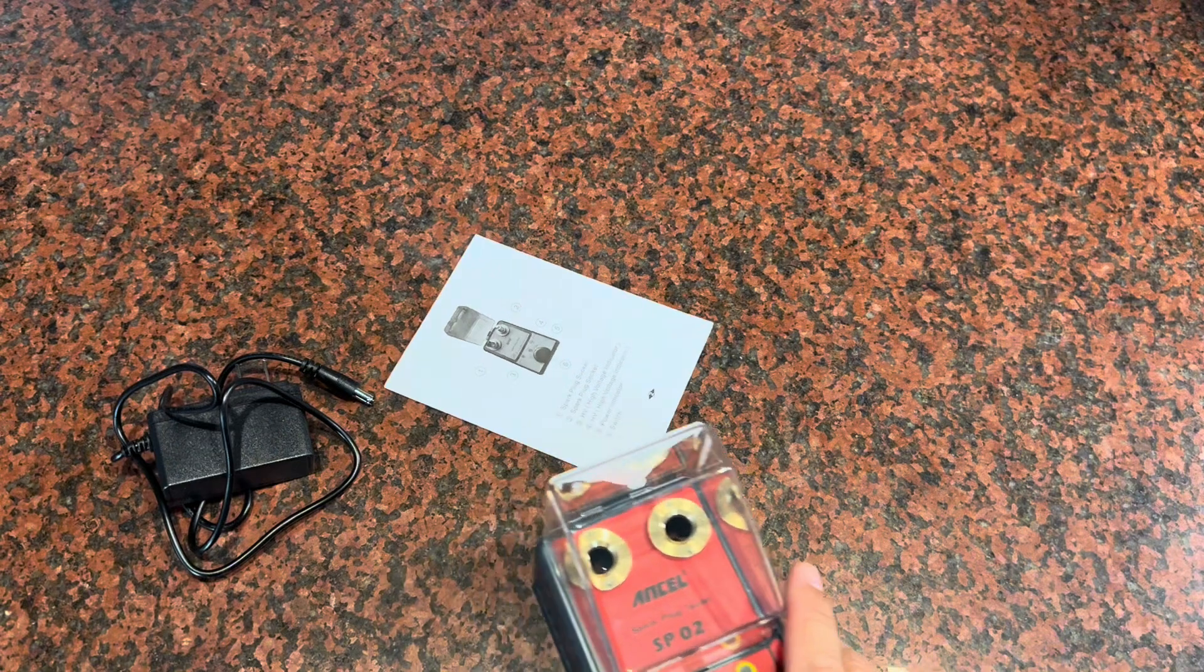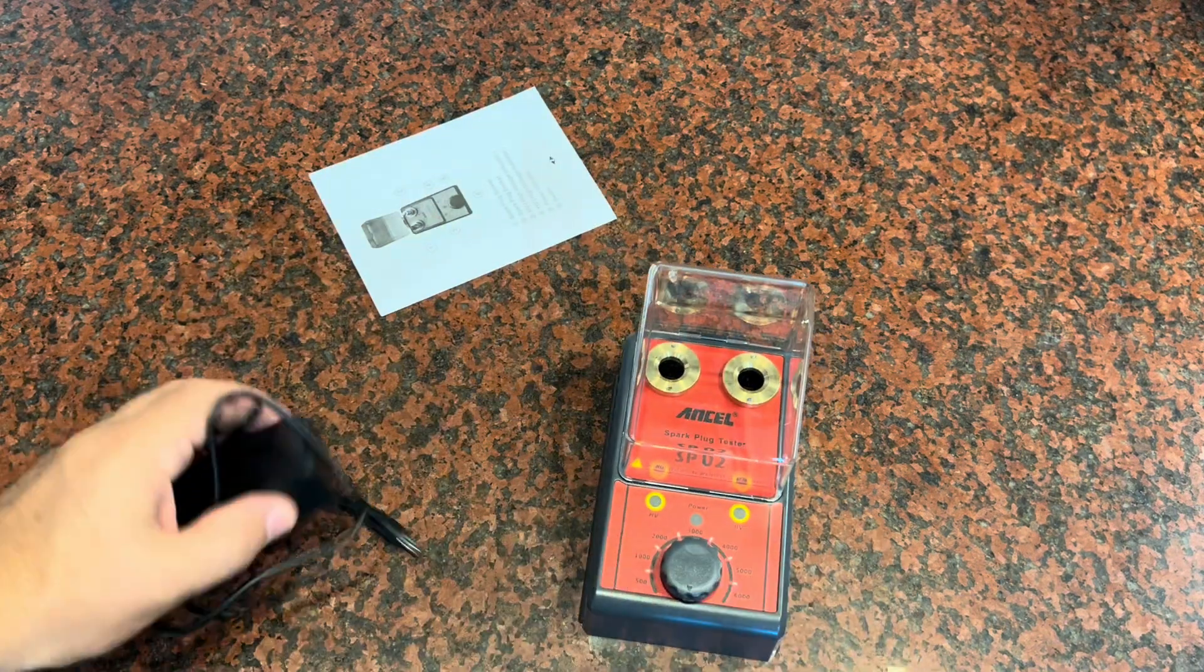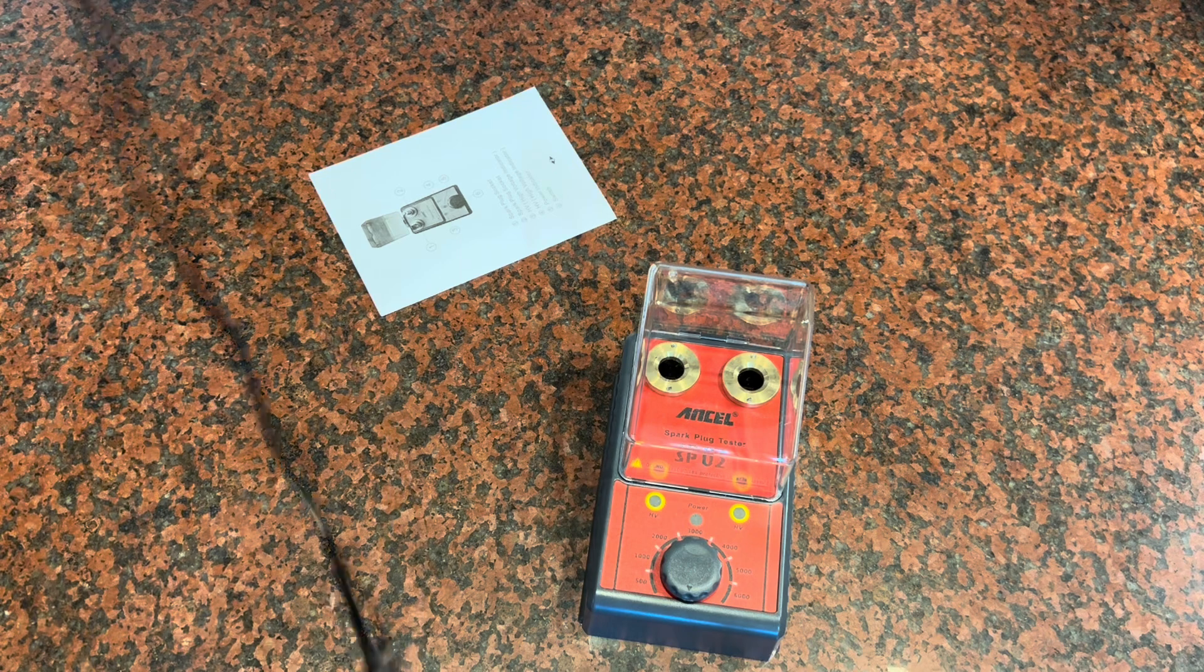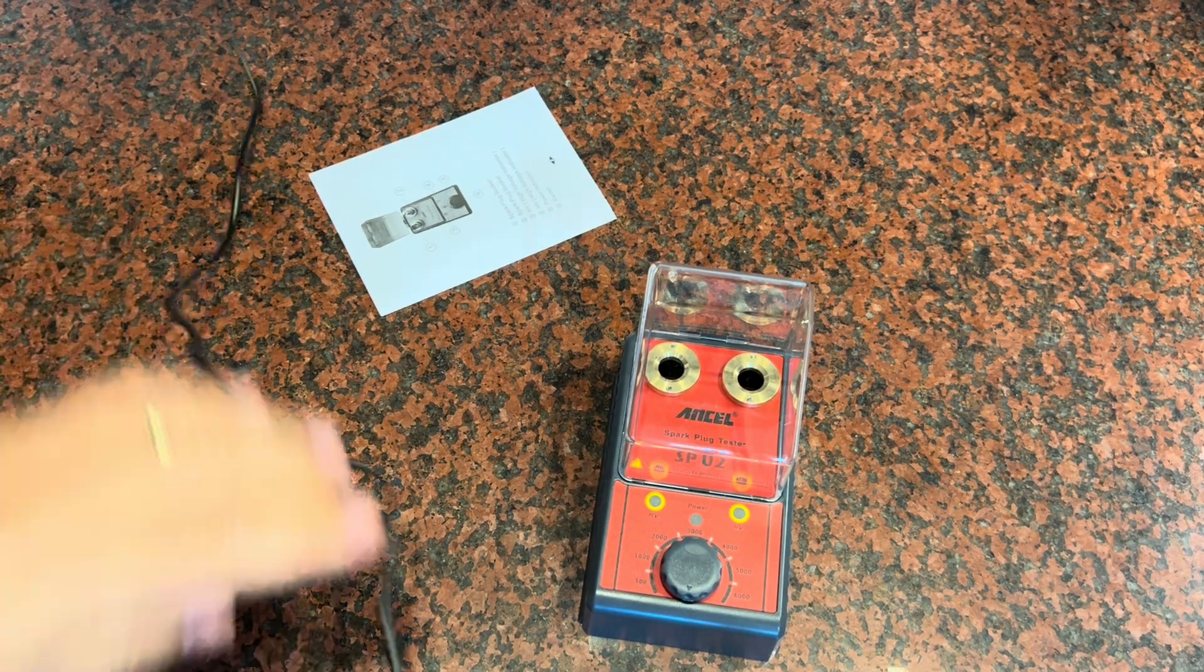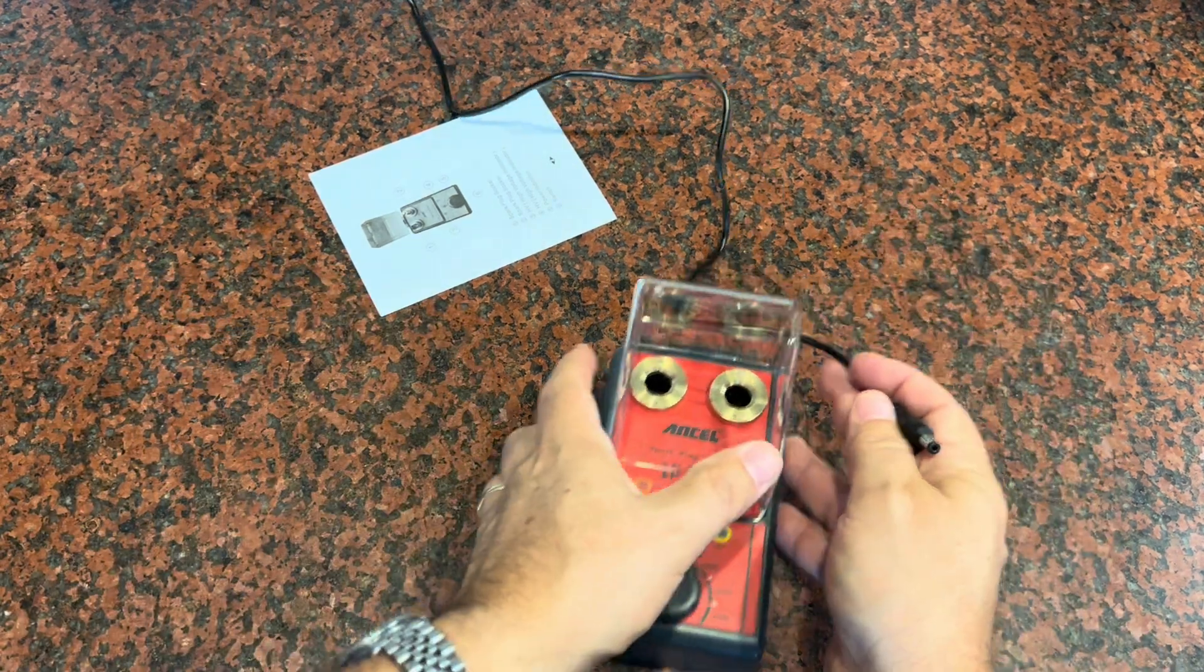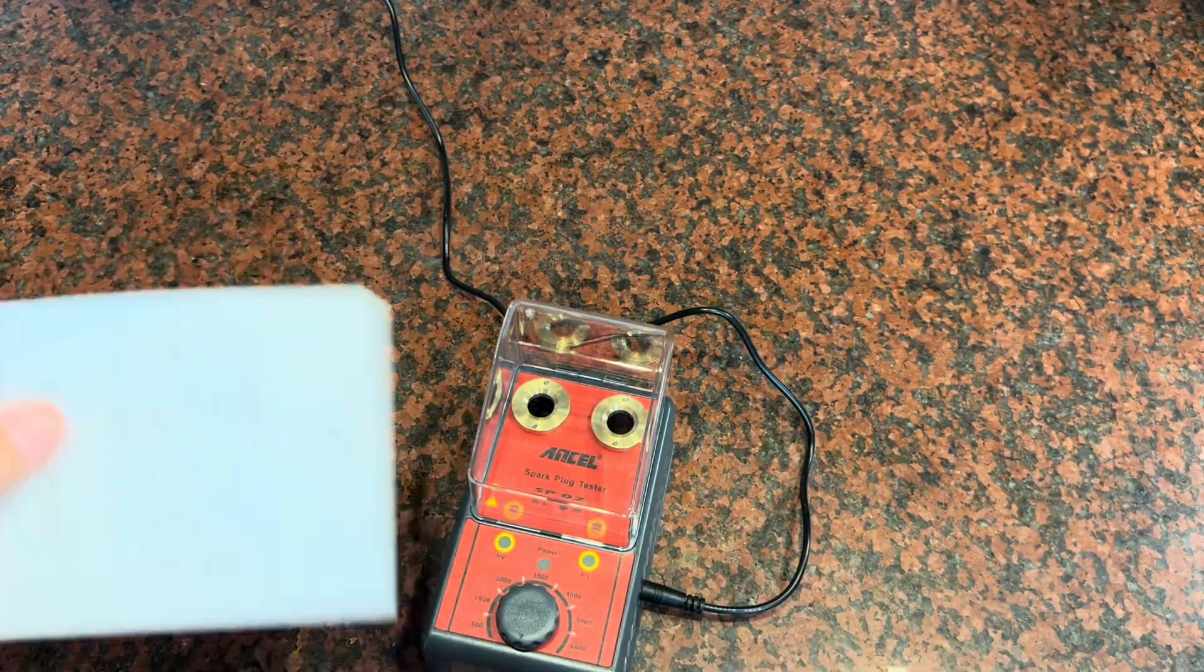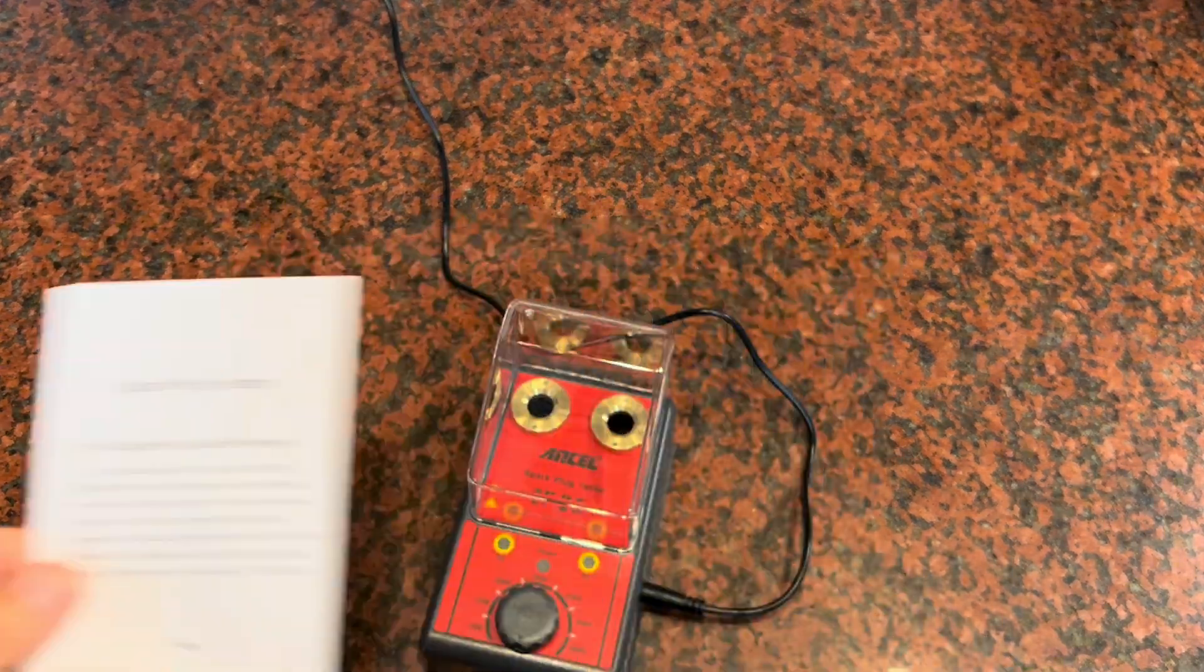This is everything you're going to get in the box. It comes with the device itself, charging cable here, actually a power cord. You're going to have to plug this in while you're using it because it puts a good amount of electricity through the spark plugs to do the test. It's just going to plug in the side like that, and you're going to get an owner's manual that explains how to use it.